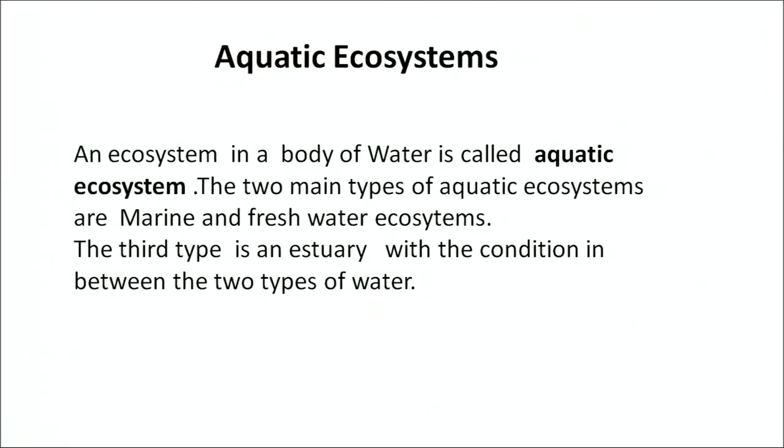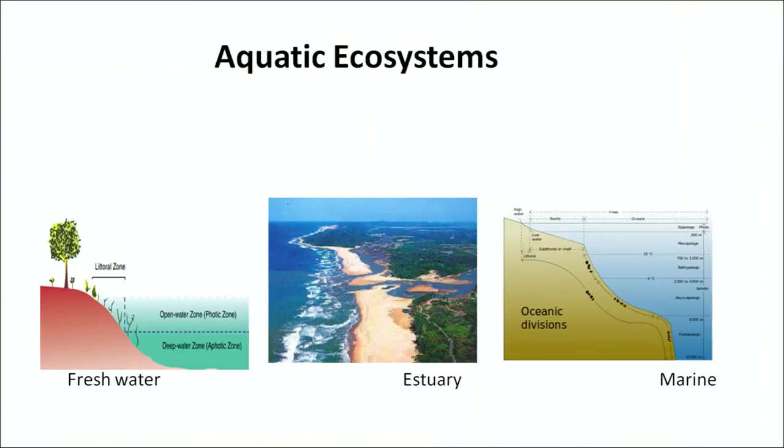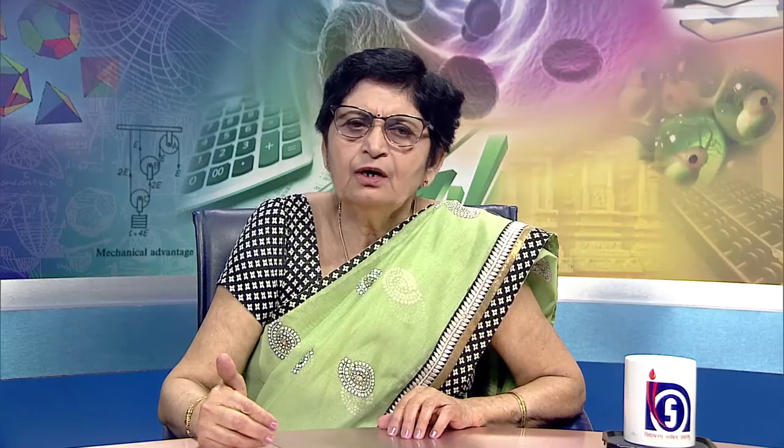An ecosystem can be divided into two types: aquatic and terrestrial. The aquatic ecosystems are marine and freshwater ecosystems. The third type, the estuary, is a condition in between the two types of water bodies. So there are three different types: freshwater, estuarine, and marine. Freshwaters are inland water bodies with no or negligible salinity, the marine biome has saline water and is very deep, and estuaries are in between the two biomes with variable salinity.